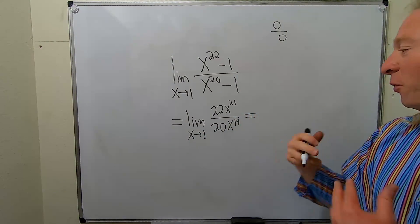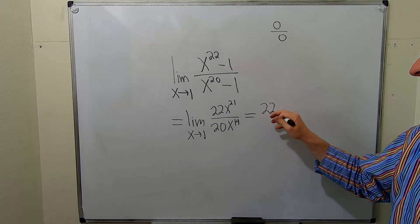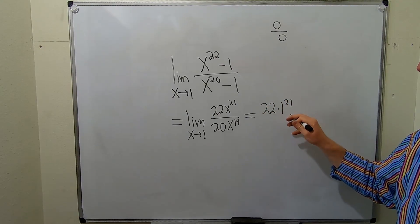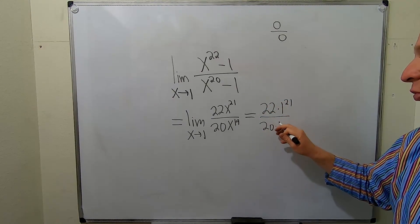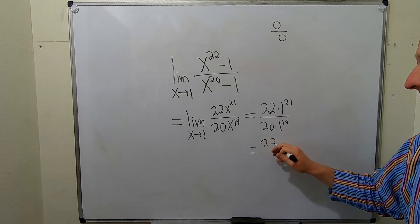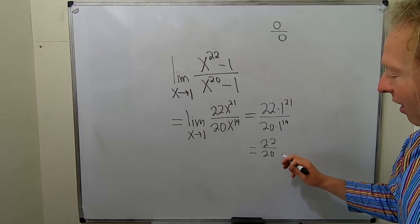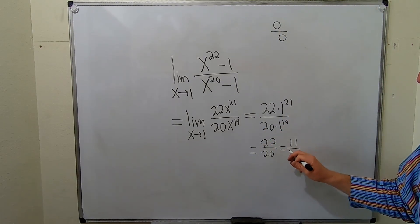Right now you can plug in the 1. When you plug in the number, the limit sign goes away. So you get 22 times 1 to the 21 over 20 times 1 to the 19. This is kind of fun. So 22 over 20. Let's not stop there. We can always divide by 2. So this will be 11 over 10.